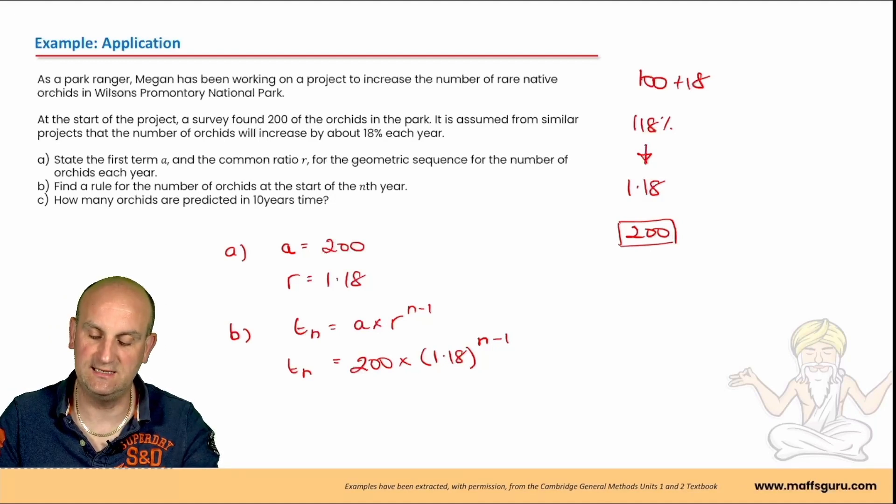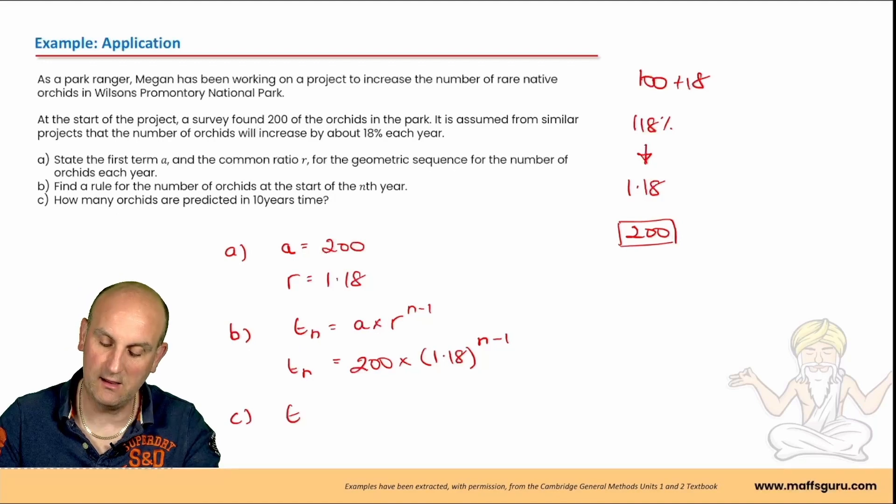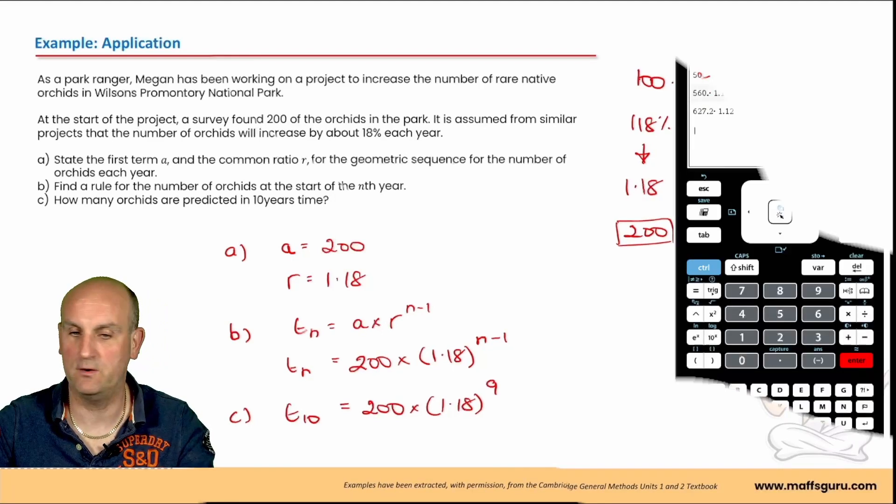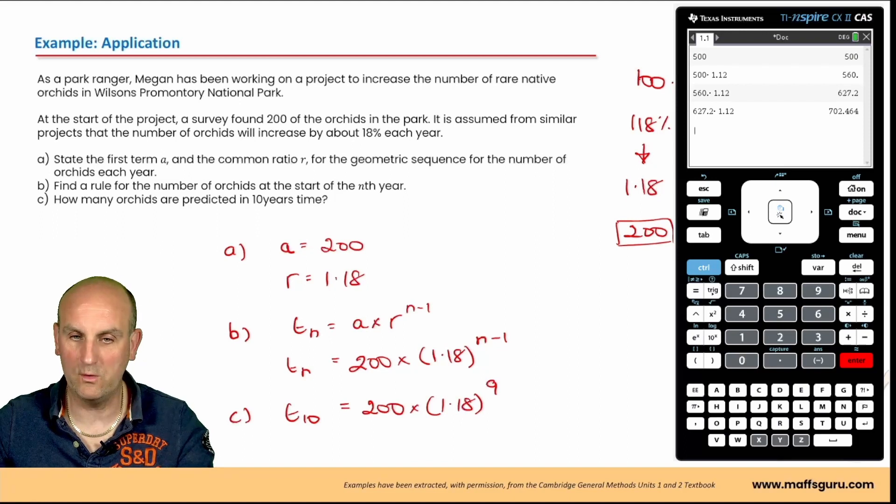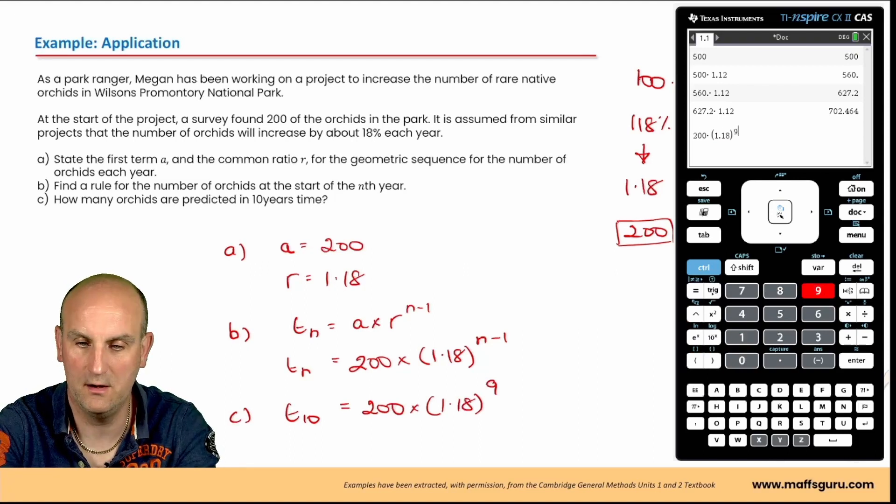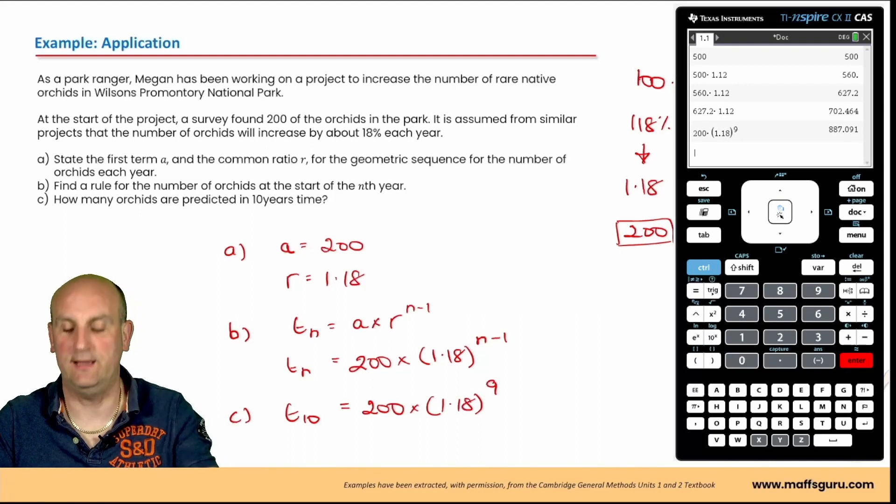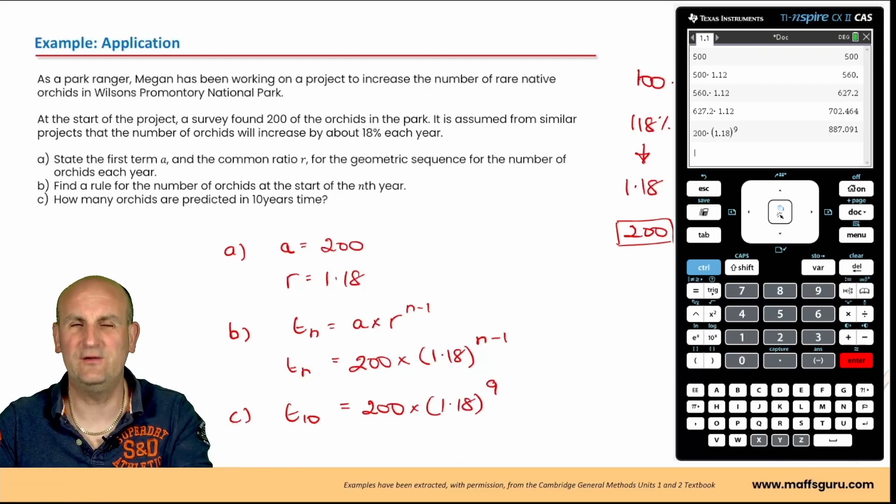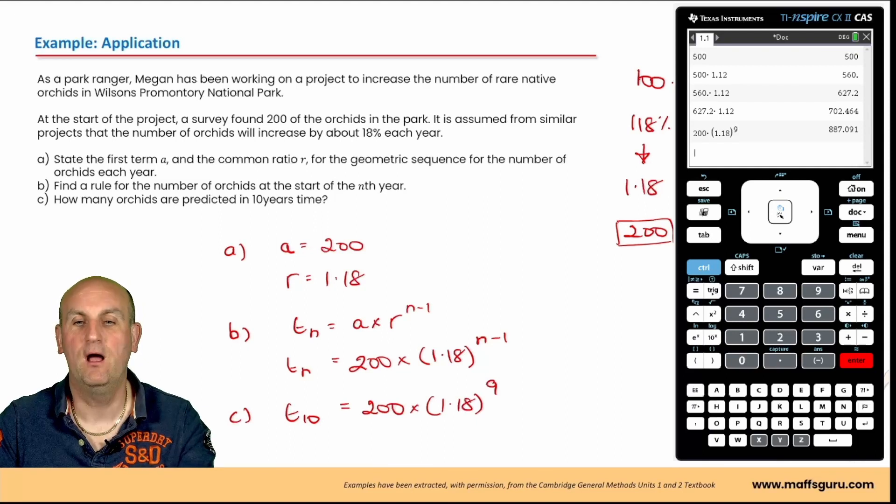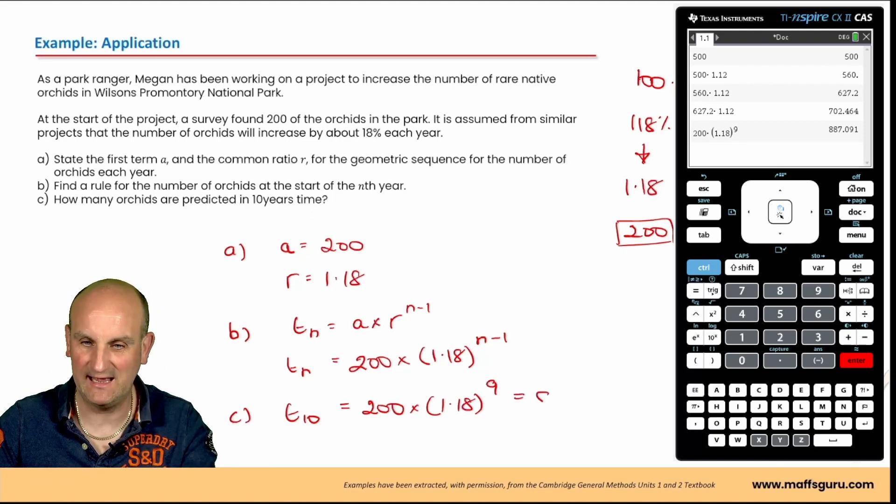C, find how many orchids are predicted in 10 years time. Well in that situation, they're asking me to find t10, which is going to be 200 times 1.18 to the power of 10 minus 1, which is going to give me 9. Finding my calculator. Can we work this out right now? Yep. So we're going to do 200 times 1.18 to the power of 9. Now knowing how to use your calculator is awesome and quick. Now we've got a decimal number there. What are we going to do here? Do we round it up? Do we round it down? Huge confusion over this to be perfectly honest with you. In this situation here, I would round it up because we've got 887.091 of an orchid. I'm not going to ignore that 0.091 of an orchid.